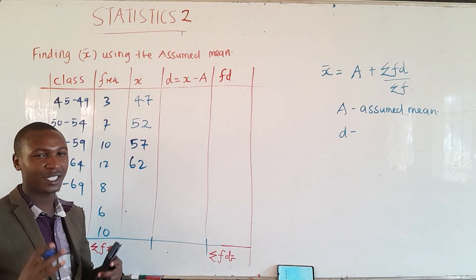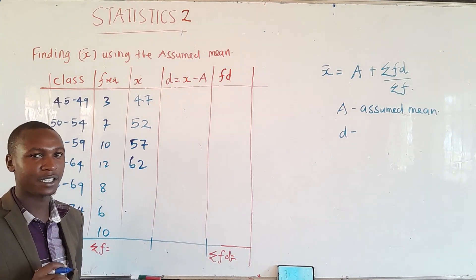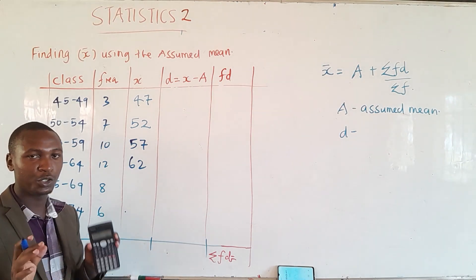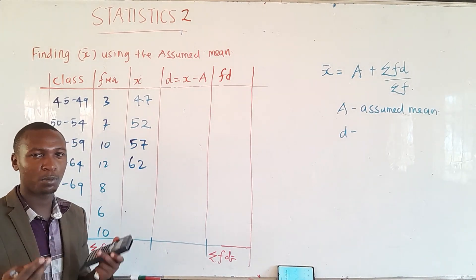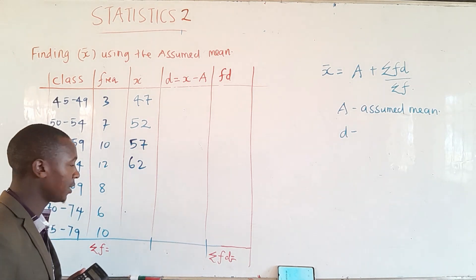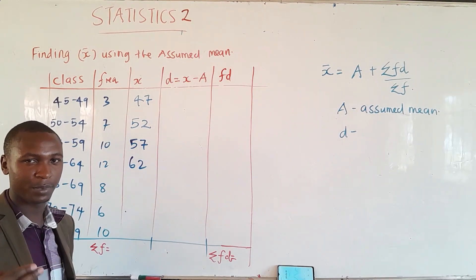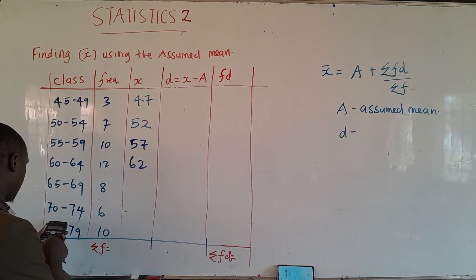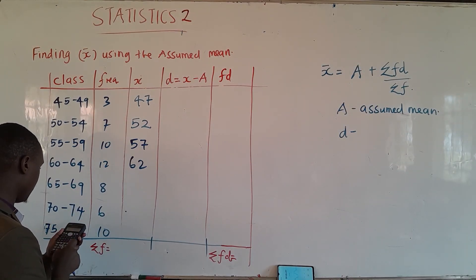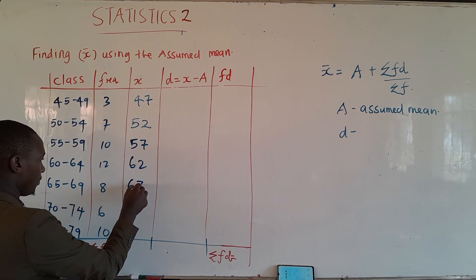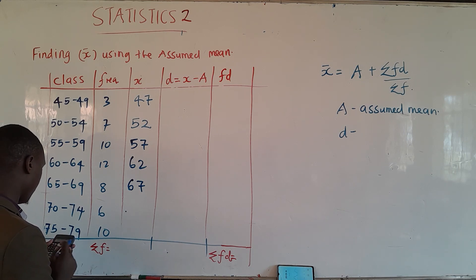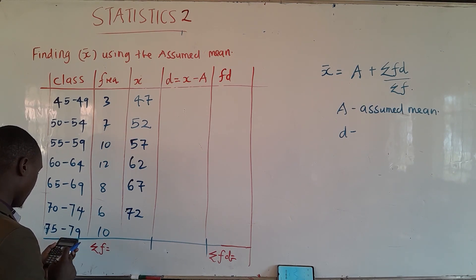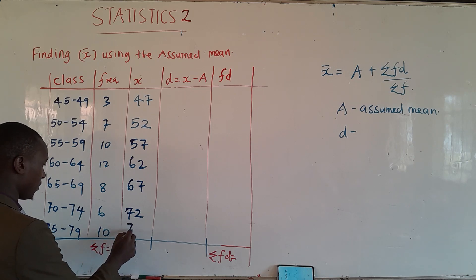In statistics we do not encourage mistakes — the moment you make a mistake, the whole data can be interpreted wrongly. Therefore, even if you think a problem is too easy, use a calculator to confirm, because the human brain is prone to mistakes. Continuing: (65 + 69) ÷ 2 = 67, then (70 + 74) ÷ 2 = 72, and lastly (75 + 79) ÷ 2 = 77. So we have all the midpoints.